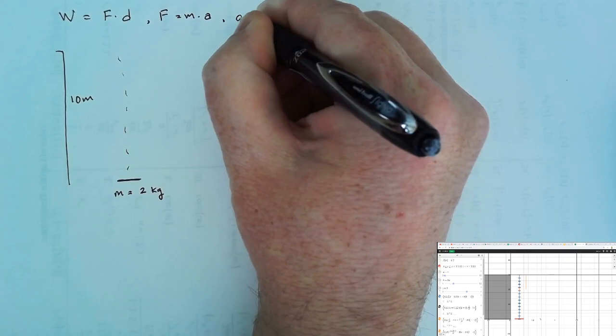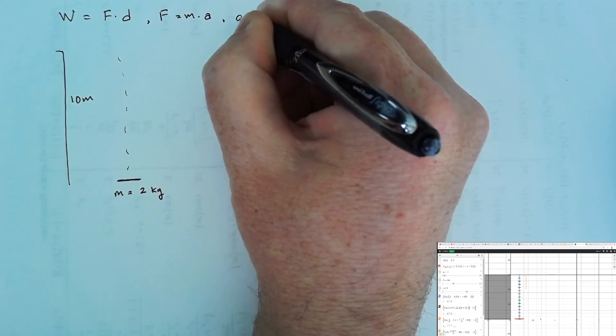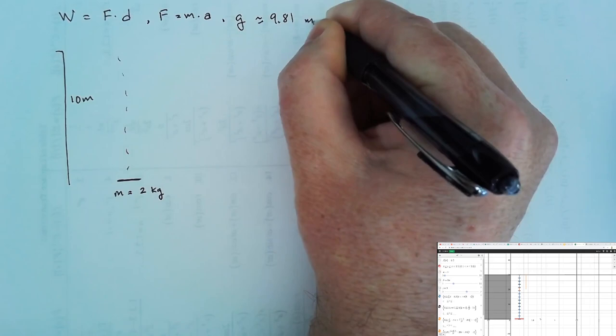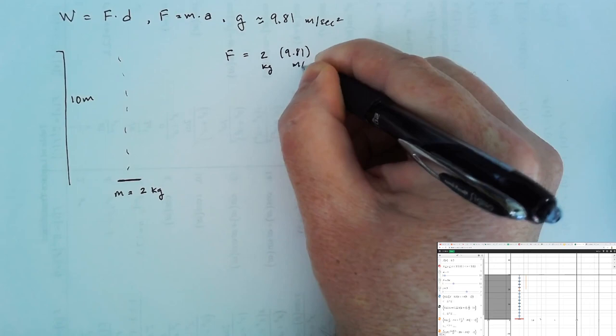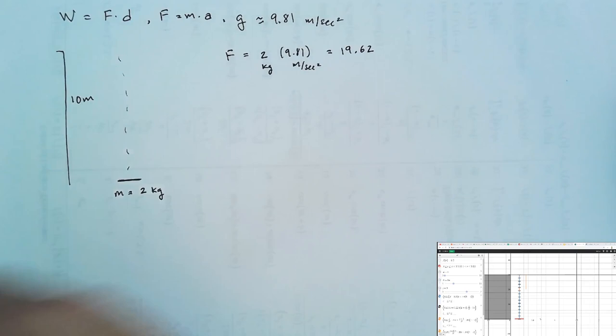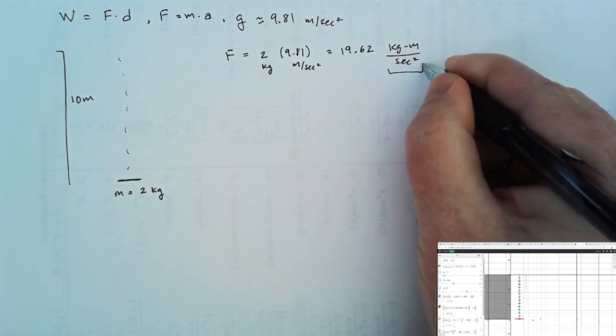Near the surface of the Earth, acceleration due to gravity is usually called g, and it's approximately 9.81 meters per second squared. So the force for the object would be 2 kilograms times 9.81 meters per second squared, and we would get 19.62 kilogram meters per second squared, which we also call newtons, or n for short.